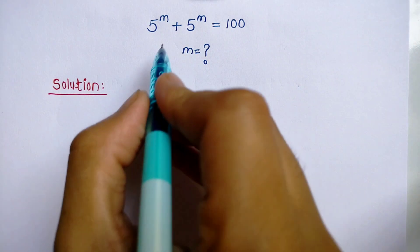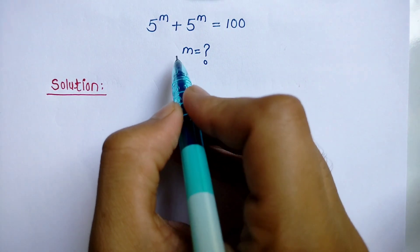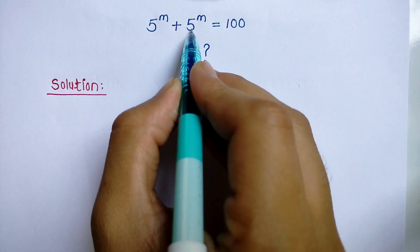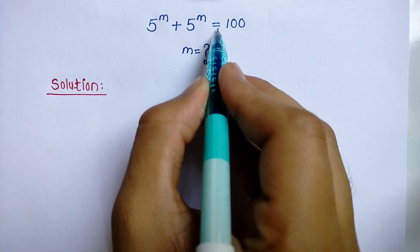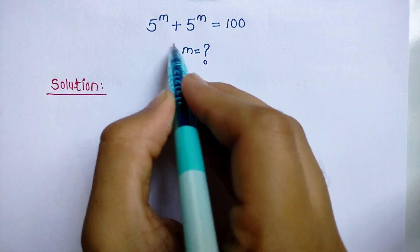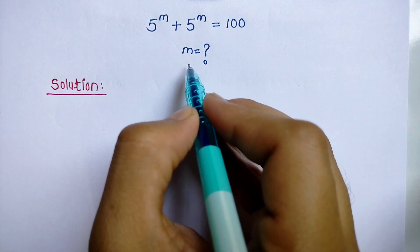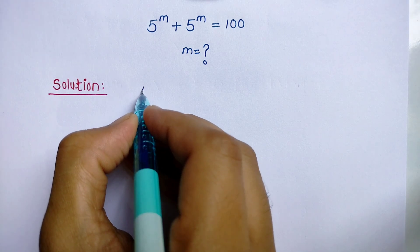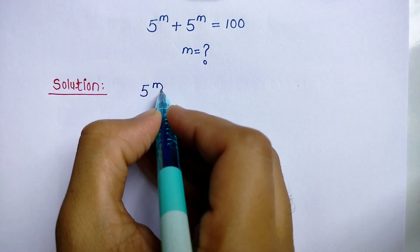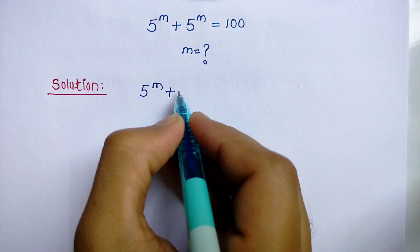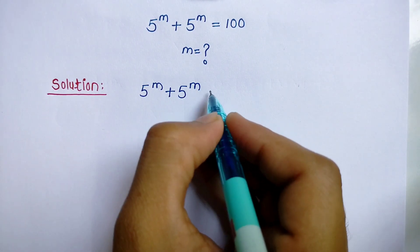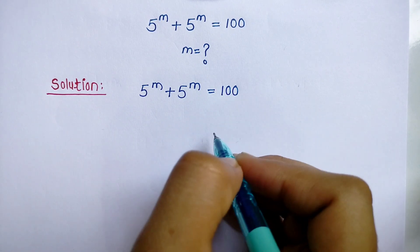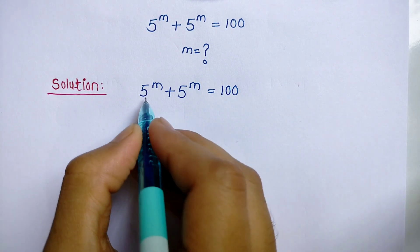Hello everyone, we have a nice question: 5 power m plus 5 power m is equal to 100. We have to find the value of m.